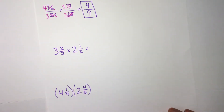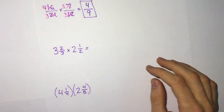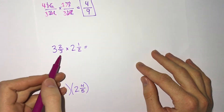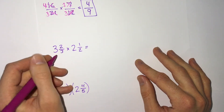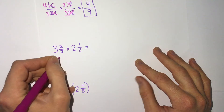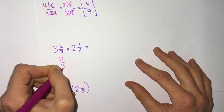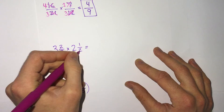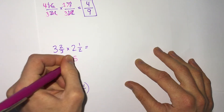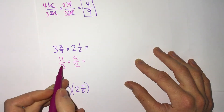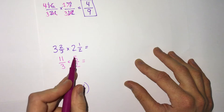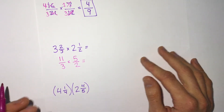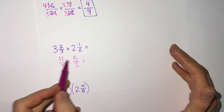What happens if we have mixed numbers? Unlike adding or subtracting, we don't have the option to keep them as mixed numbers — we have to change them to improper fractions. So for 3 and 2 thirds: 3 times 3 is 9, plus 2, we get 11 thirds. Times 2 and 1 half: 2 times 2 is 4, plus 1, we get 5 halves. Now look and see if anything simplifies: 11 and 3, 11 and 2 — nothing common. 5 and 3, 5 and 2 — nothing in common.